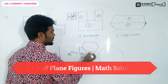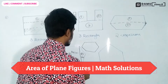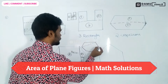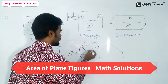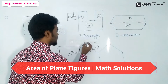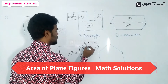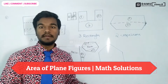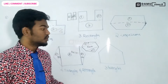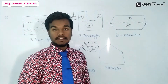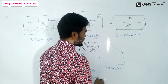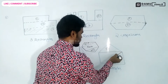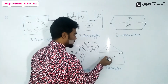You can also divide it like this for two triangles — make it like this also, no problem. This one is one, two triangles, and this one will become the rectangle. So like that also you can divide, no problem.